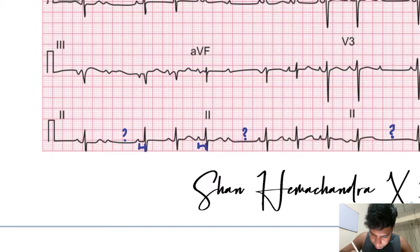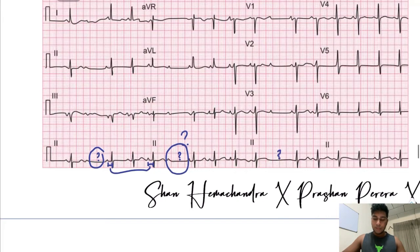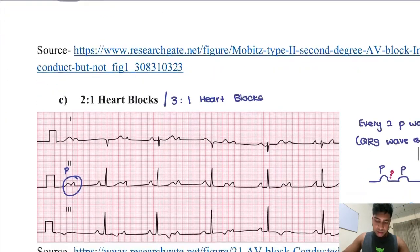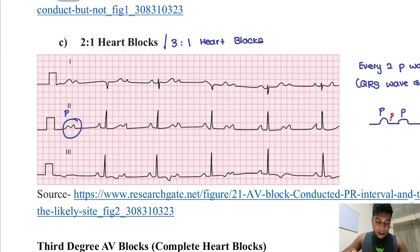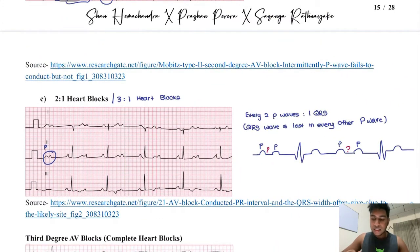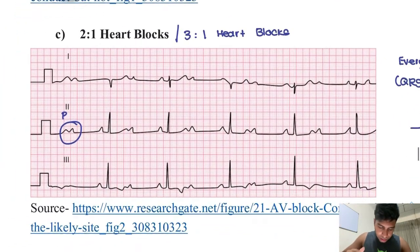On the ECG you can see the gaps between waves are constant, and then suddenly there's a missing QRS complex — a dropped beat. Next is third degree AV block, also called complete heart block. Similar to atrial flutter, you count how many P waves there are for every QRS complex.